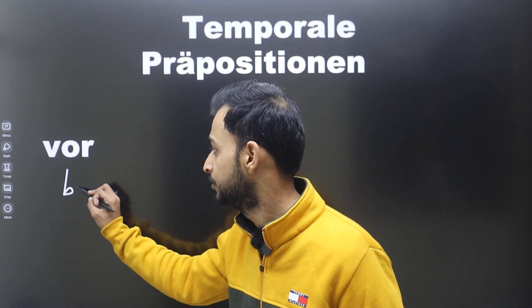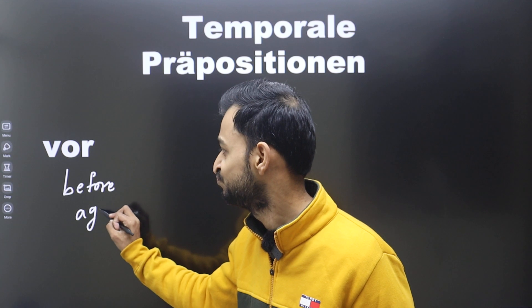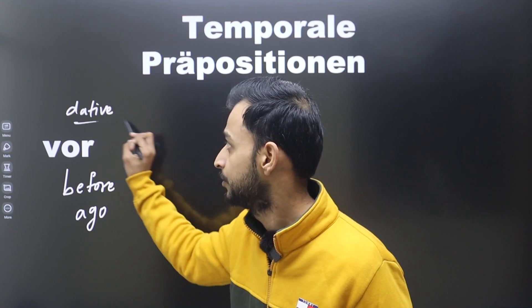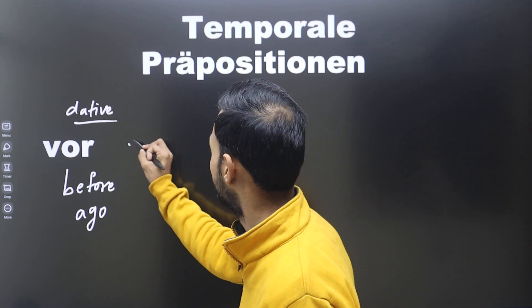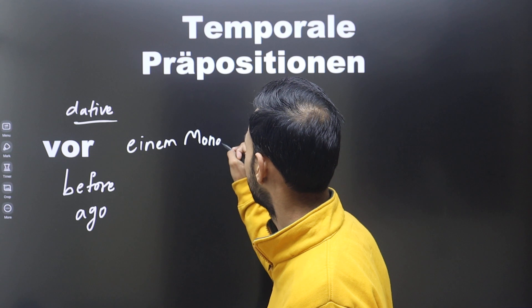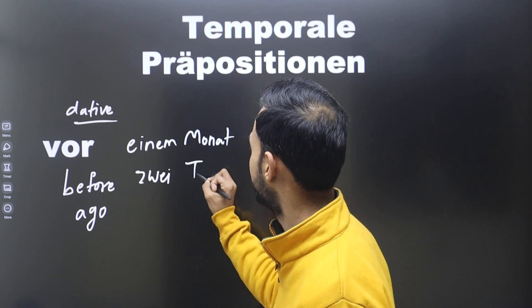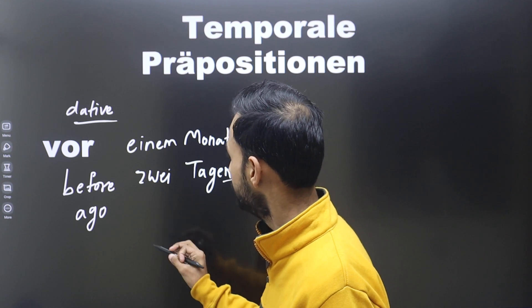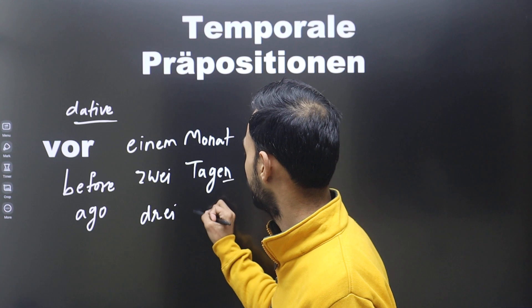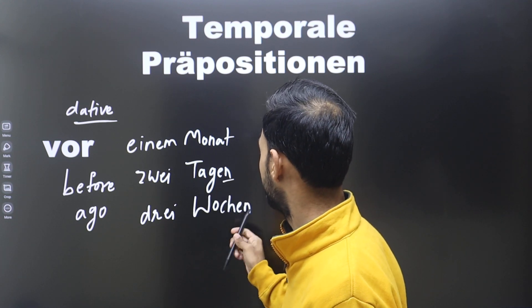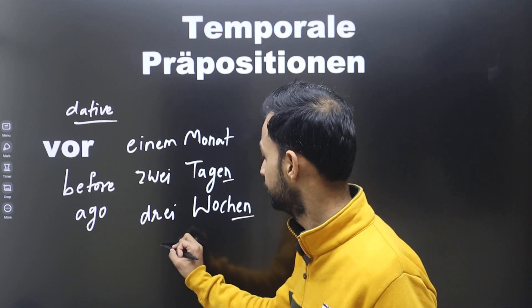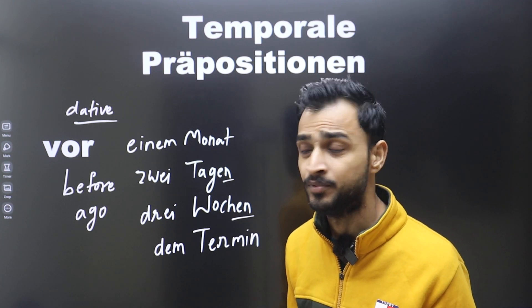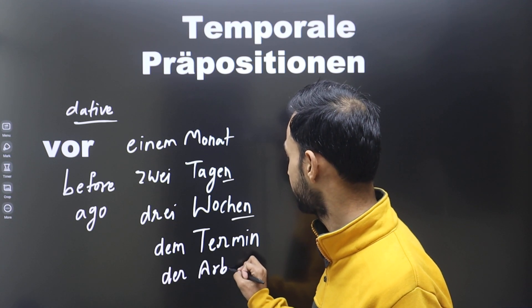Next is 'vor,' which means 'before' or 'ago.' This is a dative preposition. For example: 'vor einem Monat' (one month ago), 'vor zwei Tagen' (two days ago), 'vor drei Wochen' (three weeks ago), 'vor dem Termin' (before the appointment), 'vor der Arbeit' (before the work).